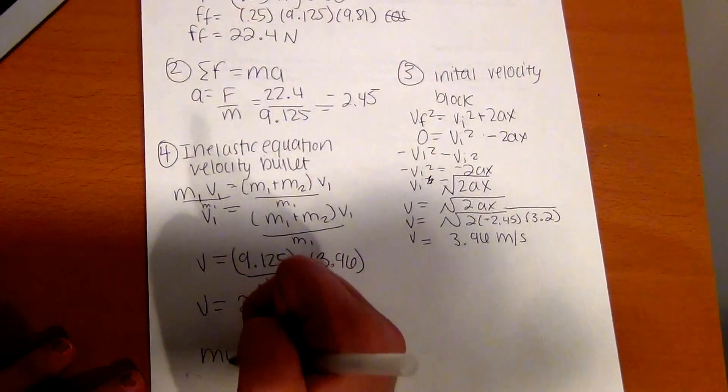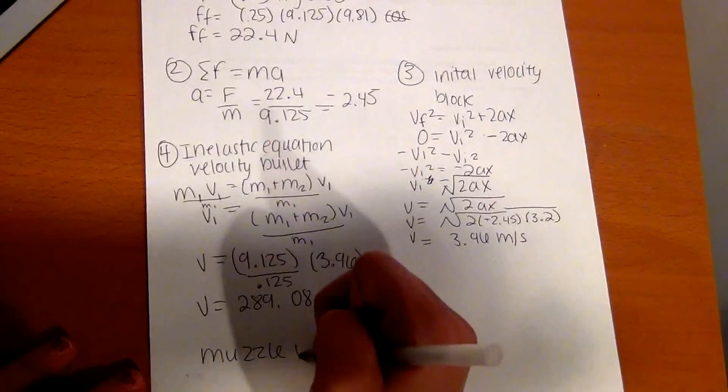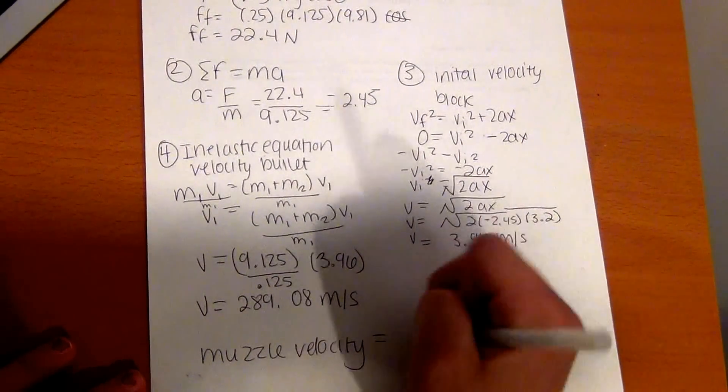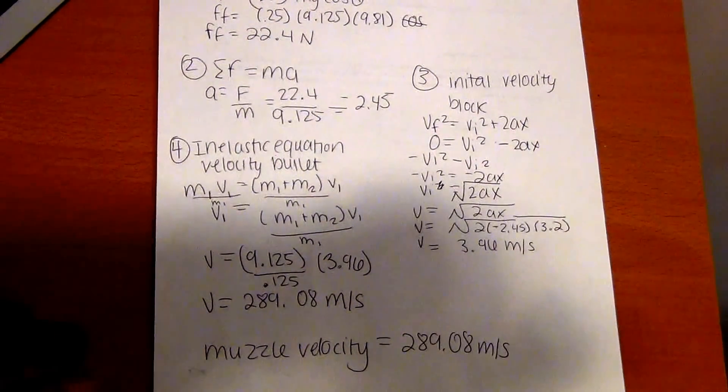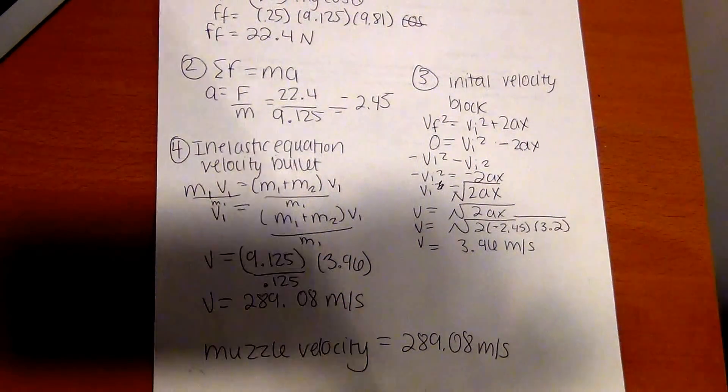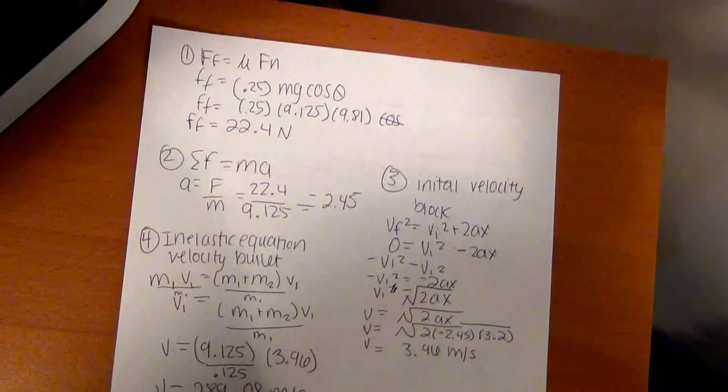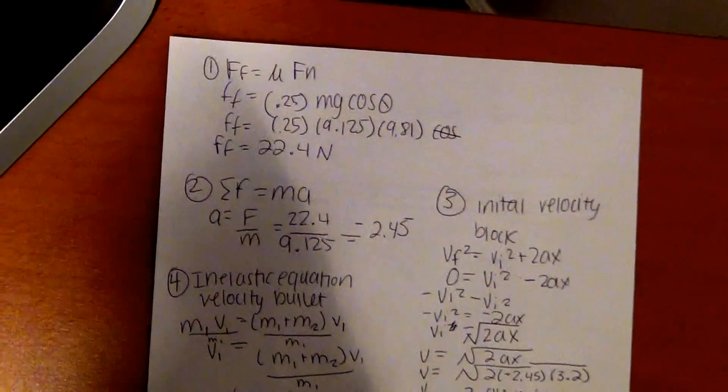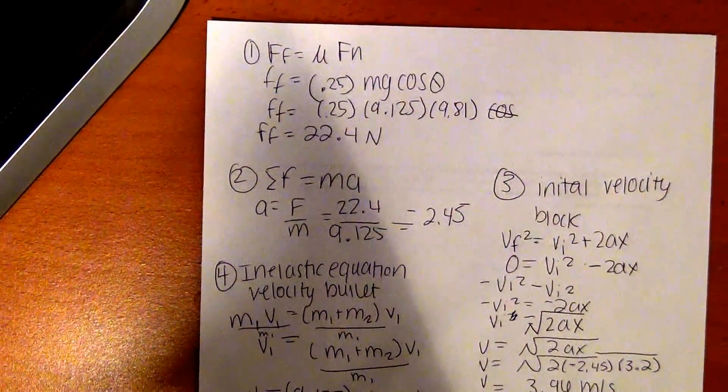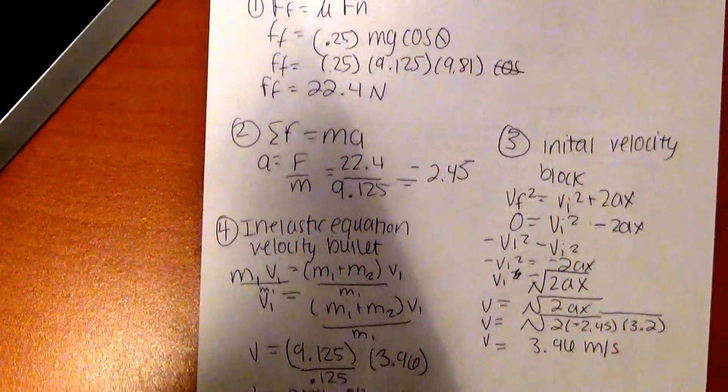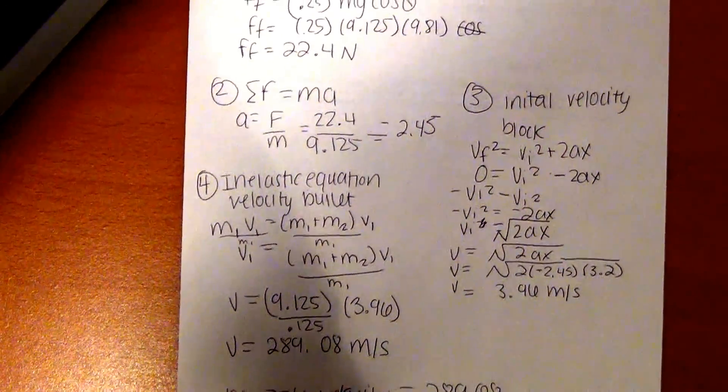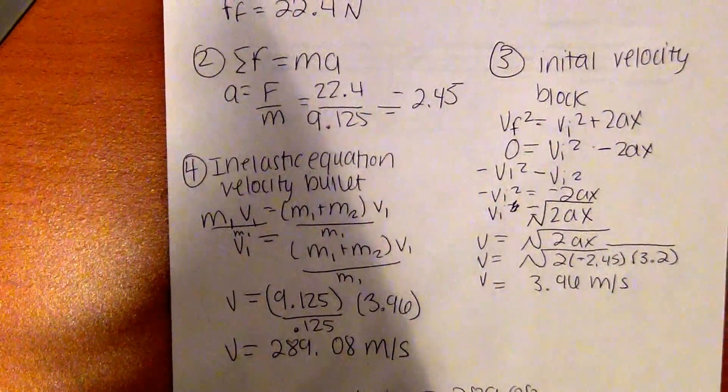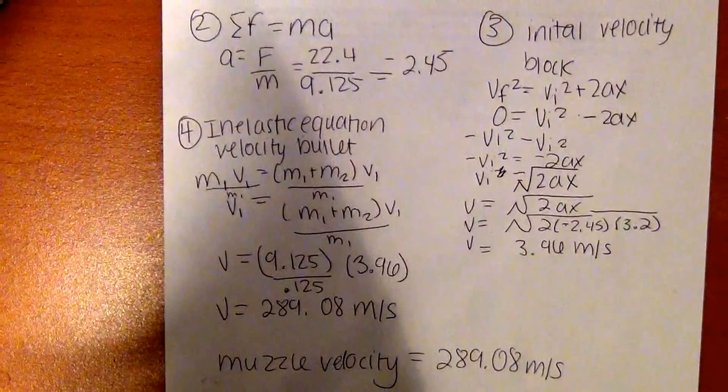The muzzle velocity equals 289.08 meters per second. To recap what we did for this problem: first, you want to find the force of friction, and the formula is mu Fn. After you get that, you want to use the net force formula to solve for A to find your acceleration. And the 2.45 is negative because it's slowing down.